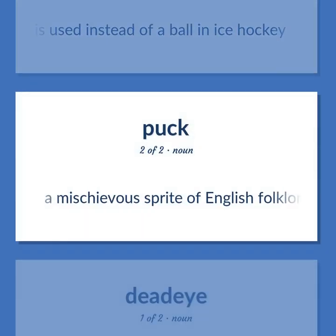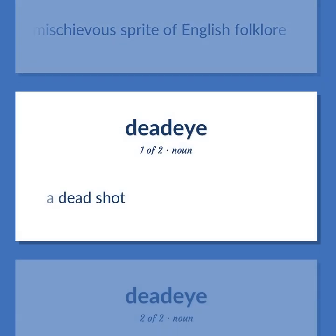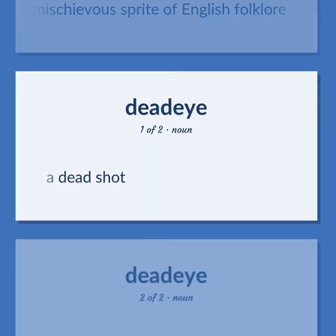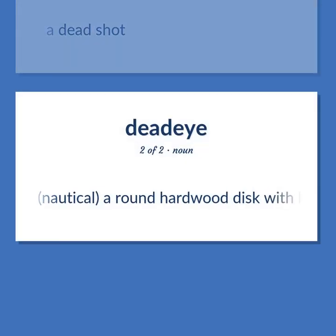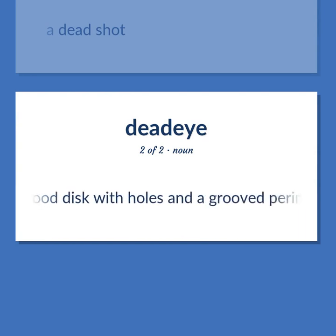A mischievous sprite of English folklore. A dead shot. Nautical: a round hardwood disc with holes and a grooved perimeter used to tighten a shroud. Become our student and get access to effective and free educational materials. Subscribe to our YouTube channel to become a part of our growing YouTube community and to learn English effectively.